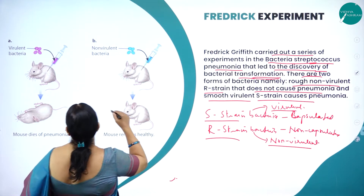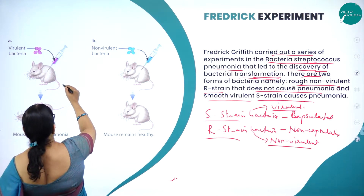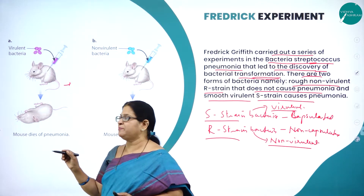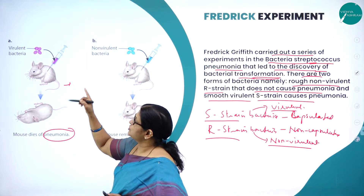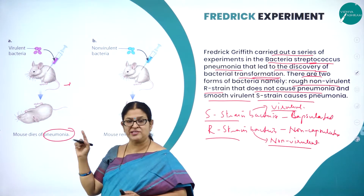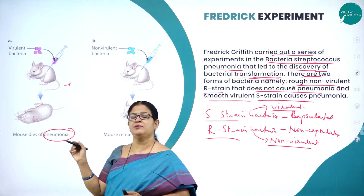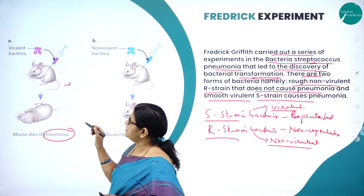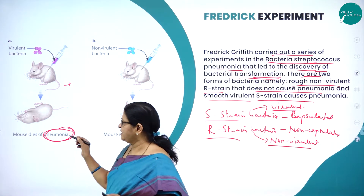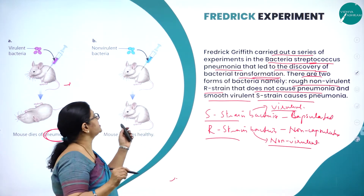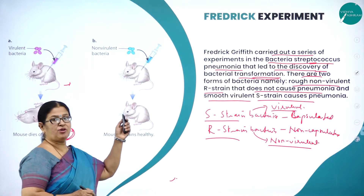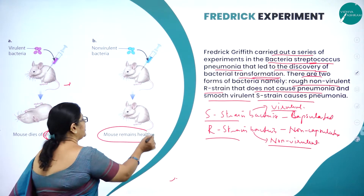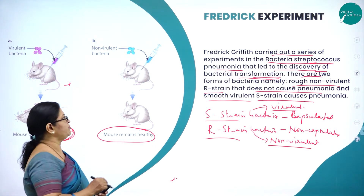He conducted the experiment as follows. When virulent S-strain bacteria was injected, the mice died because of pneumonia, as it carried Streptococcus pneumoniae. When the non-virulent R-strain bacteria was injected into the body of the mice, it remained healthy. This was the first part of his experiment.